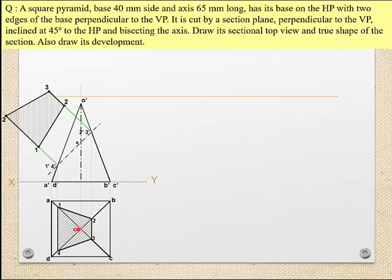Now we rotate the slant edge parallel to the VP. XY is a straight projection. O prime is a point like a joint. For the true slant length, one parallel line is drawn. O-C is rotated, and O-B is also rotated. Then XY is used as a projection line to find the true lengths.